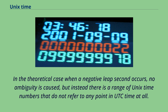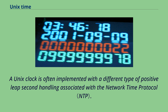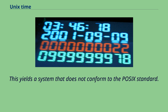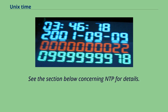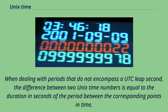In the theoretical case when a negative leap second occurs, no ambiguity is caused, but instead there is a range of Unix time numbers that do not refer to any point in UTC time at all. A Unix clock is often implemented with a different type of positive leap second handling associated with the network time protocol, yielding a system that does not conform to the POSIX standard. When dealing with periods that do not encompass a UTC leap second, the difference between two Unix time numbers is equal to the duration in seconds of the period between the corresponding points in time.